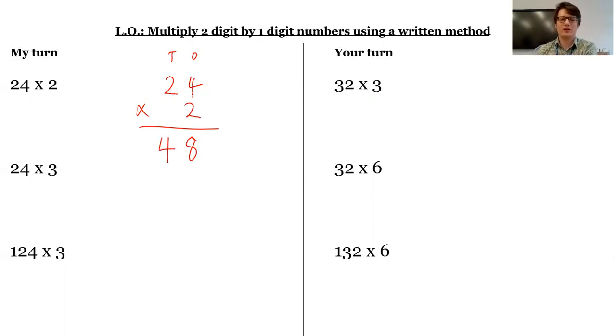But remember really what's gone on here is I've actually done 2 lots of 2 tens. 2 times 2 tens is 4 tens, 2 times 20 is 40.